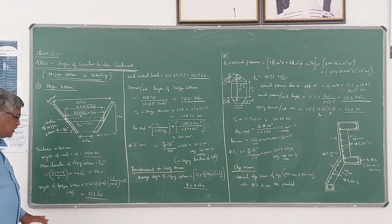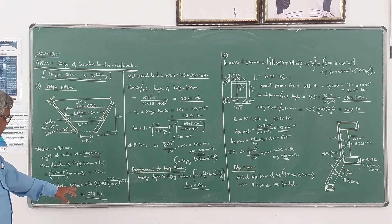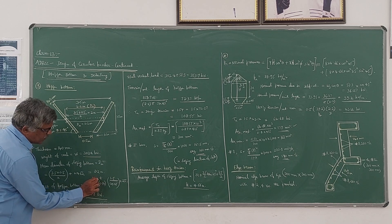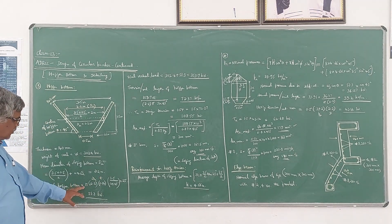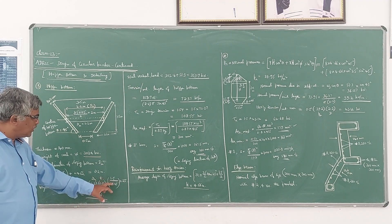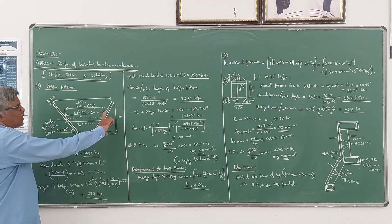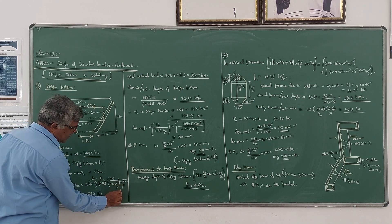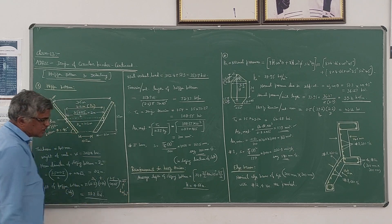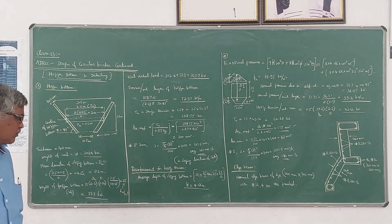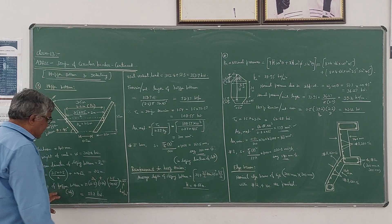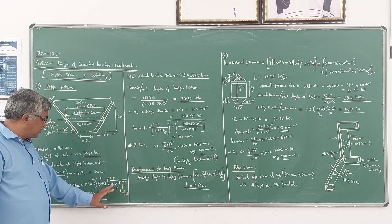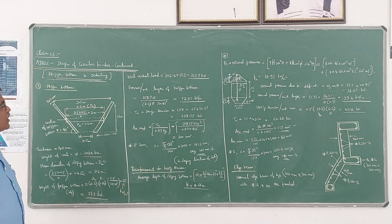The weight of the hopper bottom is calculated using the formula: pi into dm into thickness, which is the volume, then multiplied by the height divided by cos 45, into 25, where 25 is the density of concrete in kilo Newton per meter cube. When volume is multiplied by the density we get the weight, which comes out to be 51.3 kN.